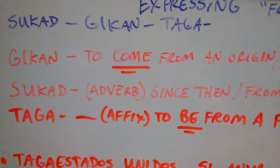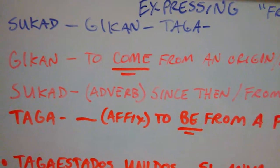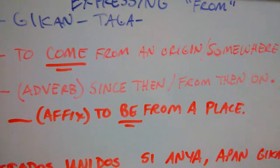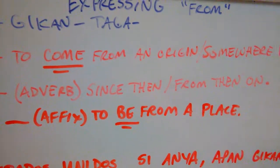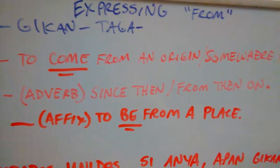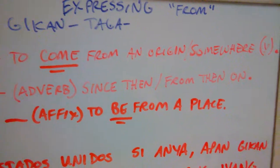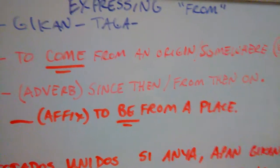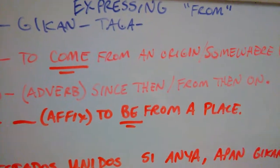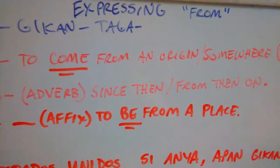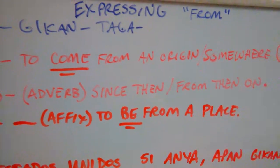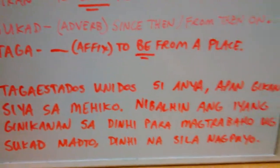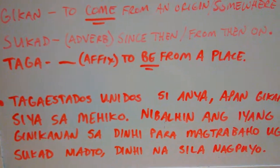And Taga, our affix — the only affix — is close to Gikan, but it's an affix meaning that you are being from a place, to be from a place, not coming from a place. So Gikan is to come from a place of origin or somewhere, while Taga means to be from a place — you are from that place. And here below is our sentence that's going to incorporate all of them.